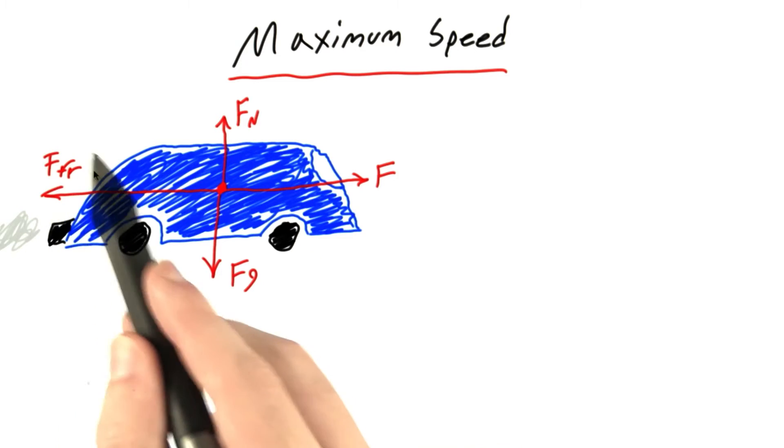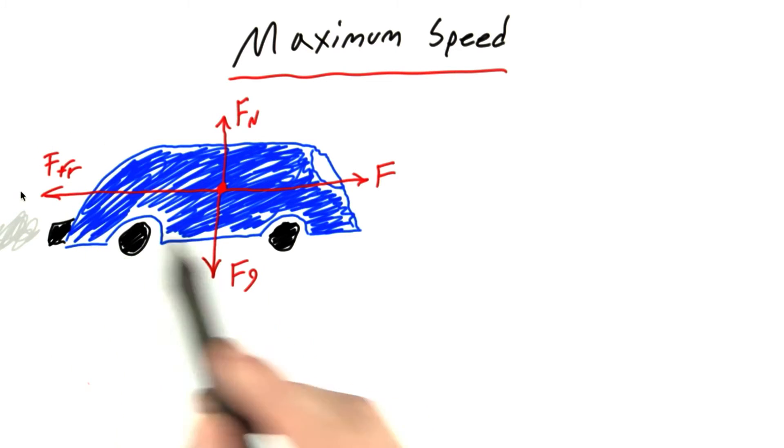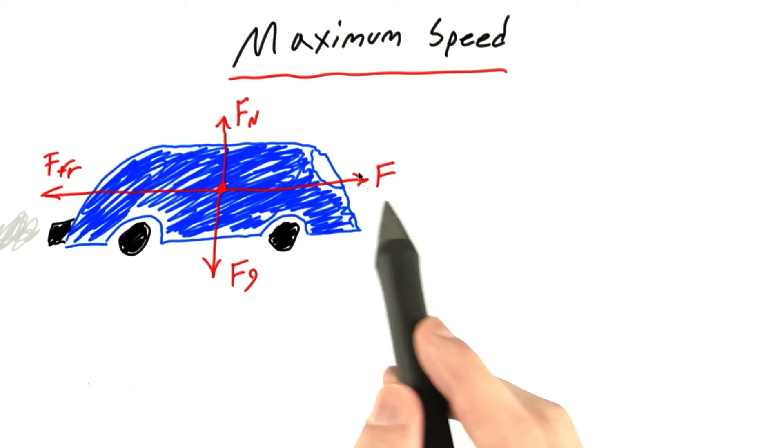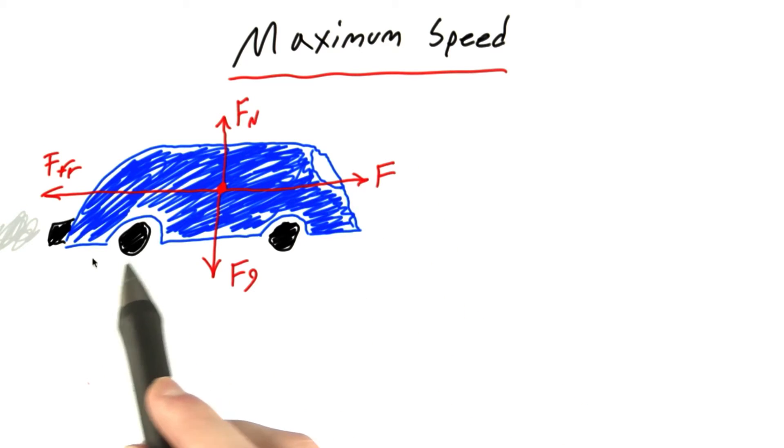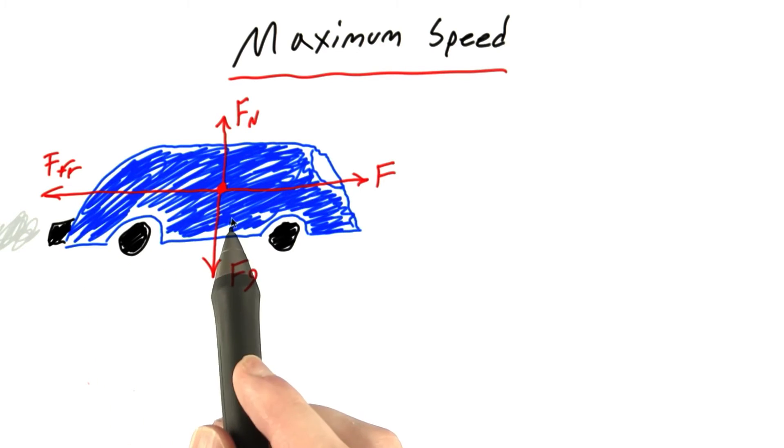And of course we have the frictional force, which we've said is equal to bv squared. And we've got the force that the car is producing to make it go forward. This force is actually produced by the road pushing up on the wheels. By Newton's third law, the wheels push on the ground and the ground pushes back up on the wheels causing the car to move forward.